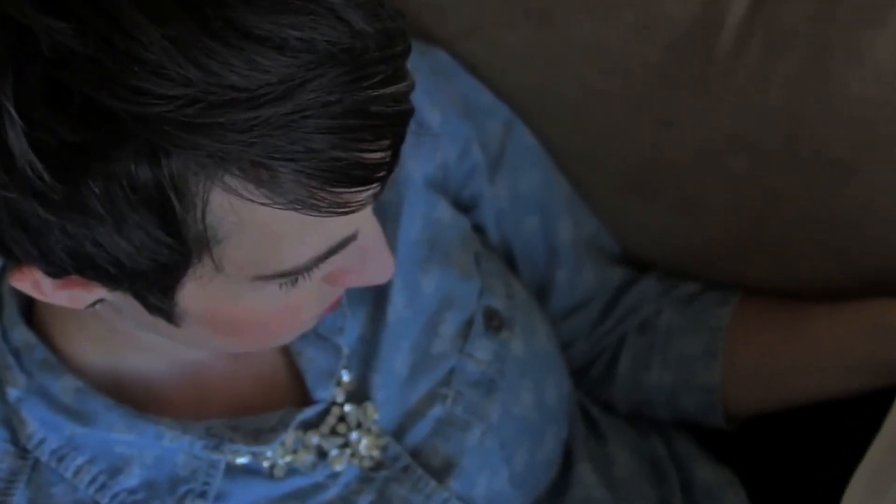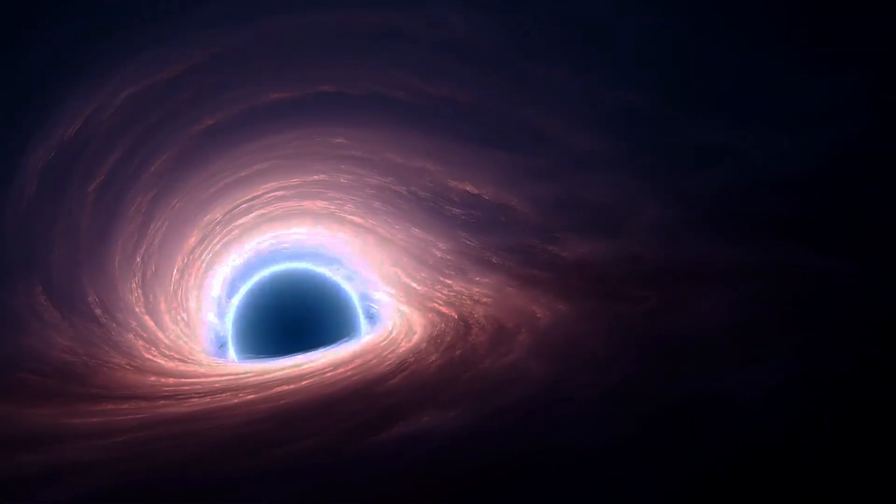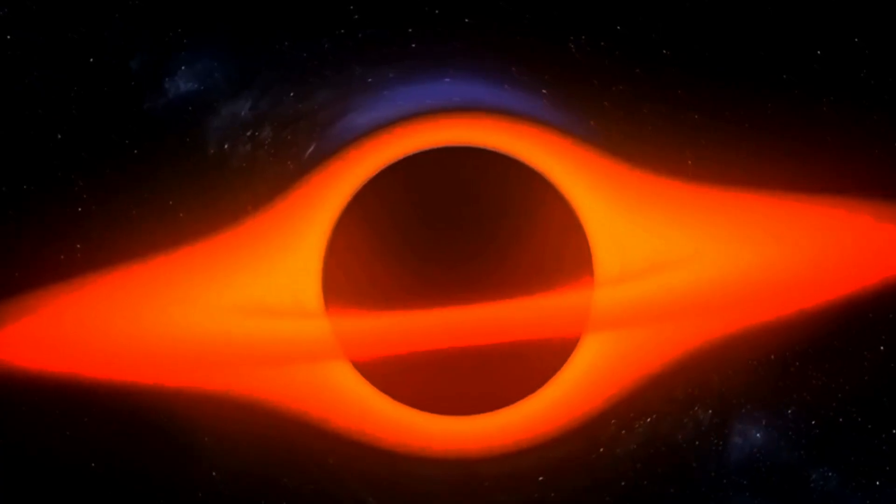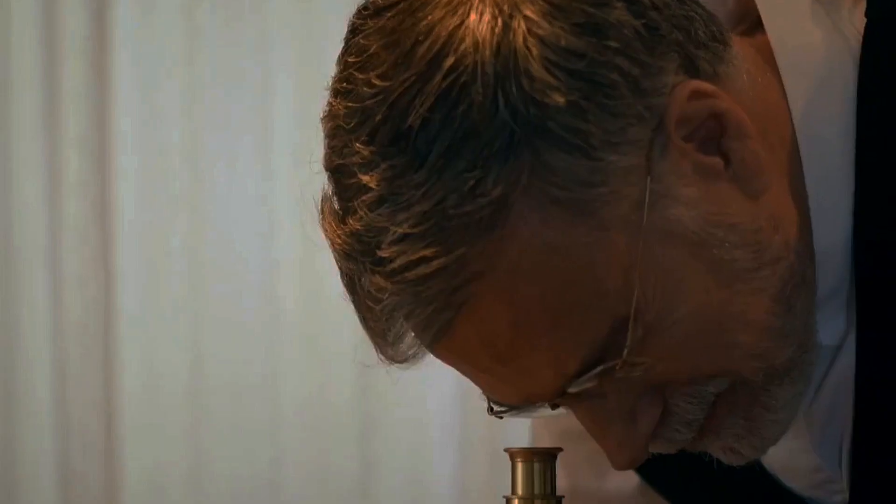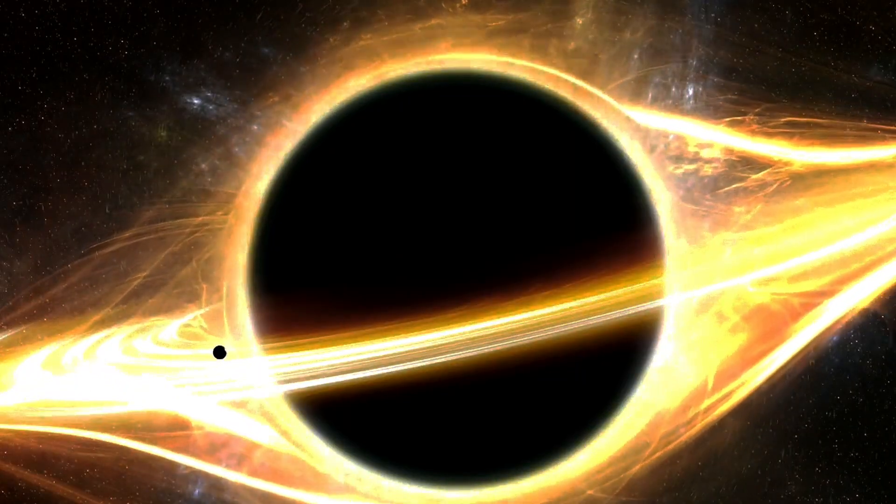Black holes are one of only a fairly small number of cases in the history of science in which a theory was developed in great detail as a mathematical model before there was any evidence from observations that it was correct. The mathematical elegance of the theory provided a compelling reason to believe in the existence of black holes even before direct evidence was available.